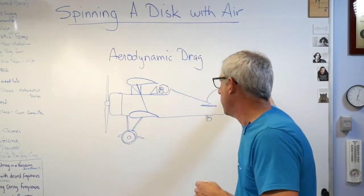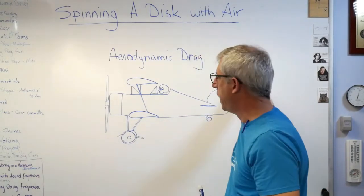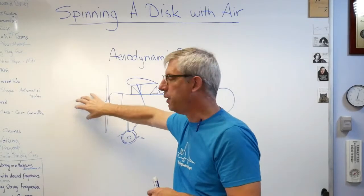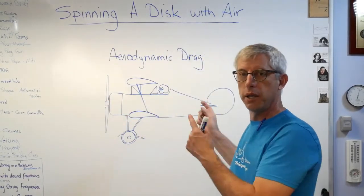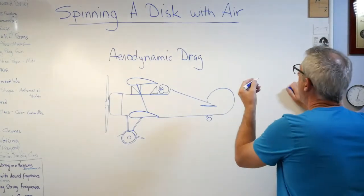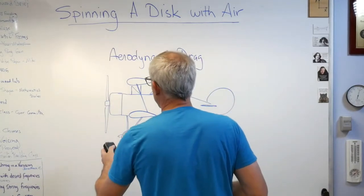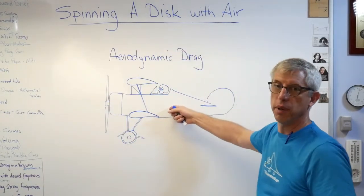Now aerodynamic drag can come from a couple of places. One of the places is the pressure differential between the front and back. It's going to be high pressure here as you're going through the air and low pressure there, and the difference between those can create drag. Another one is drag at the surface, drag from shear stress across the surface as you move through the air.